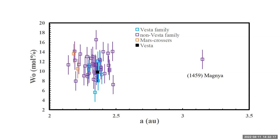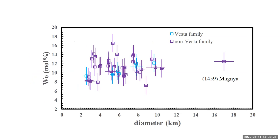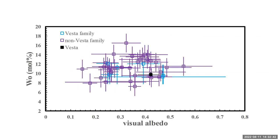We also plotted diameter — with diameter and visual albedo mostly from NEOWISE, except for Vesta and Magnea — and didn't see any trend in composition with diameter. Magnea is an object at 3.15 AU, far from Vesta, almost certainly not a fragment of Vesta, yet it seems to have a composition relatively similar to other Vestoids. We also plotted visual albedo and saw no obvious trend between albedo and wollastonite. That makes sense because the average albedo for eucrites, Howardites, and diogenites is pretty much about the same — around 30%.